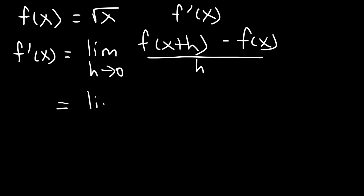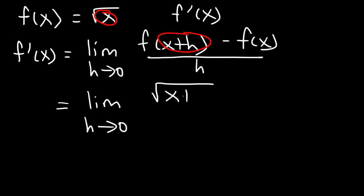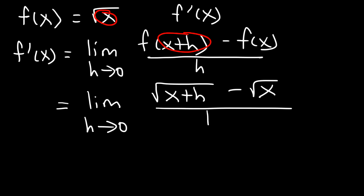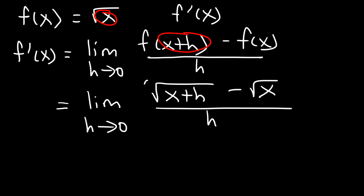In this problem, what does f of x plus h represent? All we need to do is replace x with x plus h. So it's going to equal the square root of x plus h. And f of x is simply the square root of x. What should we do if we have radicals in a fraction? To simplify this expression, you need to multiply the top and the bottom by the conjugate of the numerator.